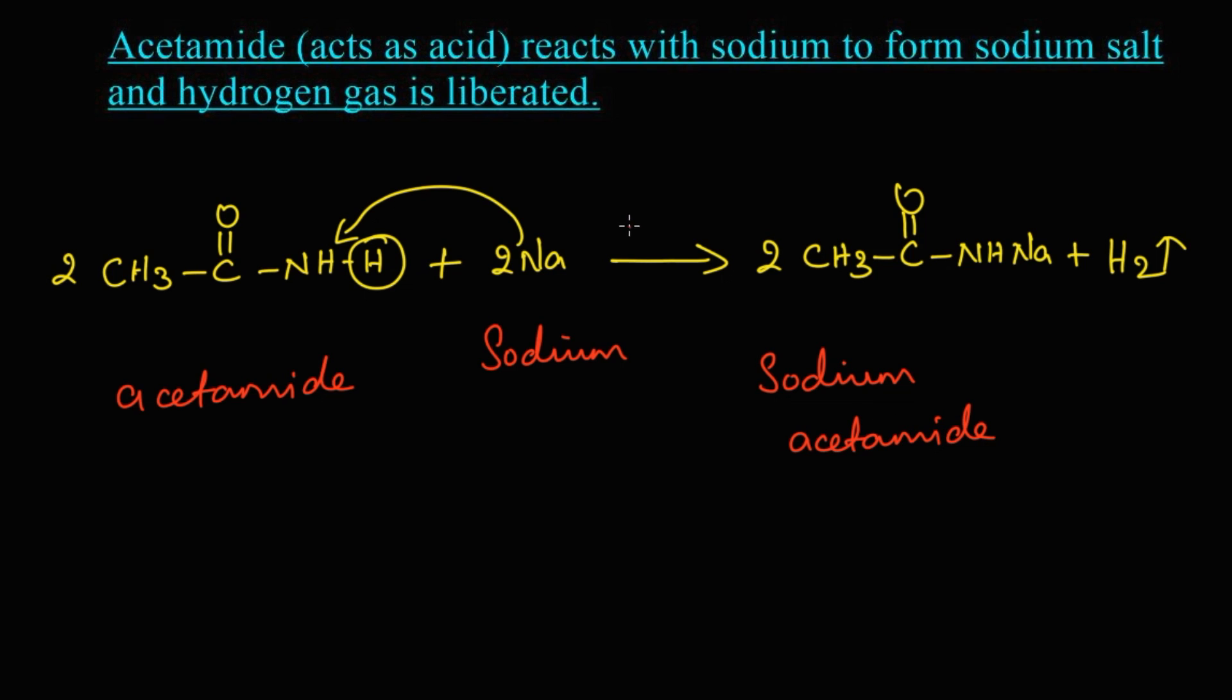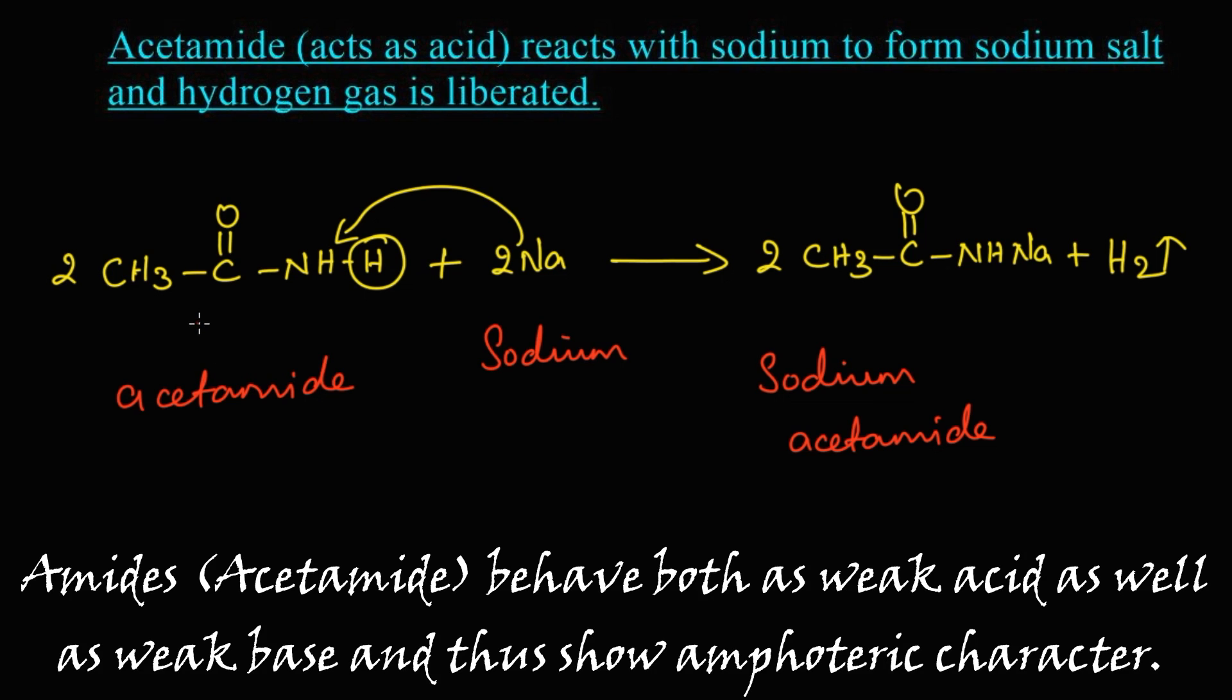Come on, let's summarize the reaction: acetamide reacts with the sodium metal to form a sodium salt, that is sodium acetamide, with the liberation of hydrogen gas. Here this acetamide acts as a weak acid. Thus acetamide behaves both as a weak acid as well as a weak base and shows amphoteric character.